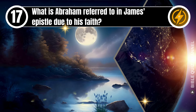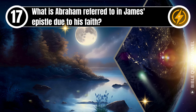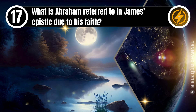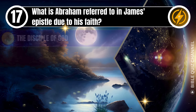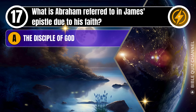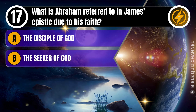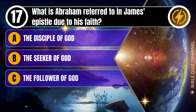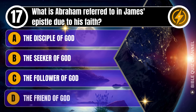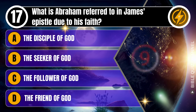Question 17. What is Abraham referred to in James' epistle due to his faith? A. The disciple of God. B. The seeker of God. C. The follower of God. D. The friend of God. You get 10 seconds.